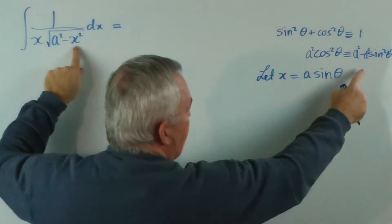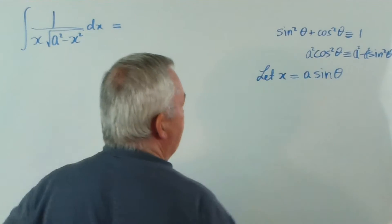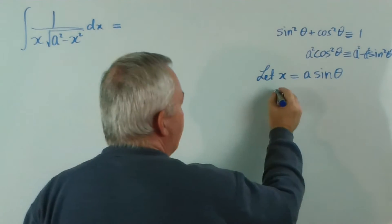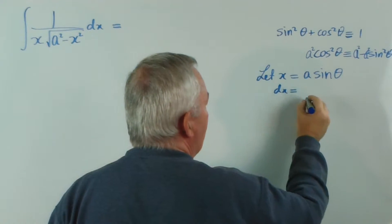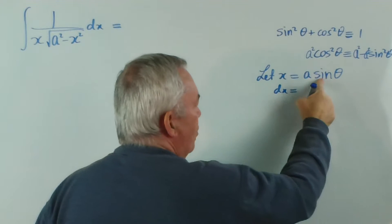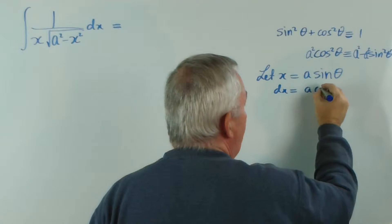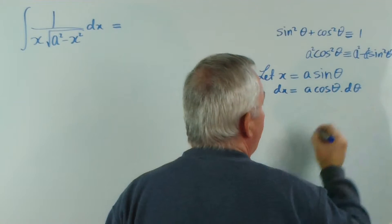And that will work just magically there — beautifully. What is dx with respect to theta? Well, dx will be the derivative of sine — that's easy — A cos theta d theta.